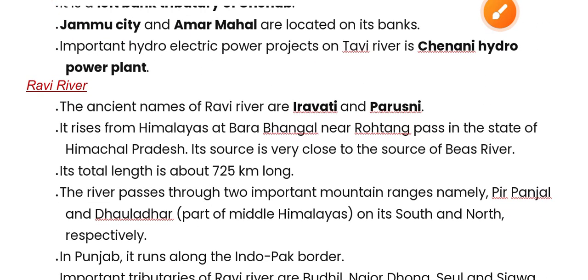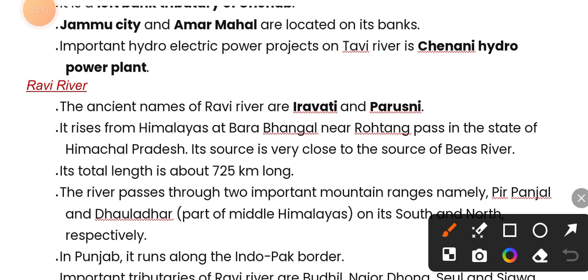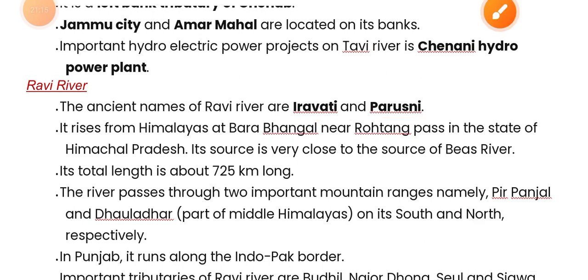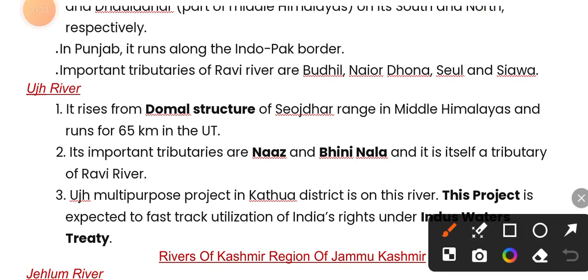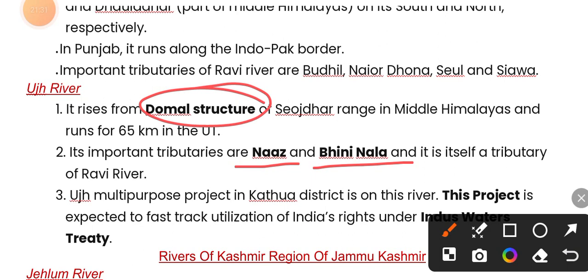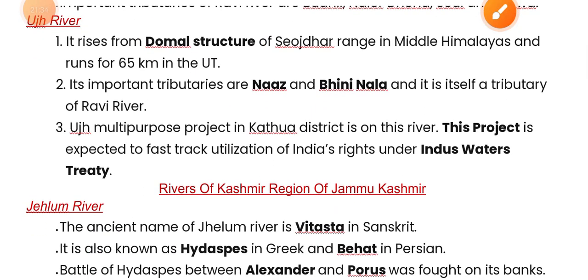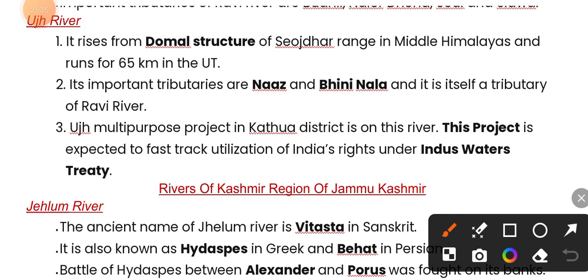The Ravi river — its ancient name is Purnarasa. It rises from the Dhaula Dhar range. An important project associated with it is the Indus Water Treaty project.